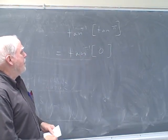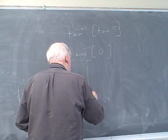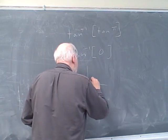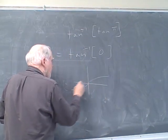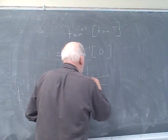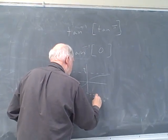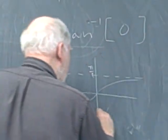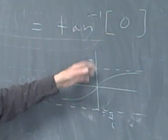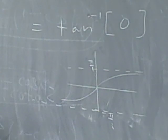What is the tangent inverse of 0? Well, if we remember our graph, it looks like this, doesn't it? The tangent inverse. This is pi over 2, and this is minus pi over 2.